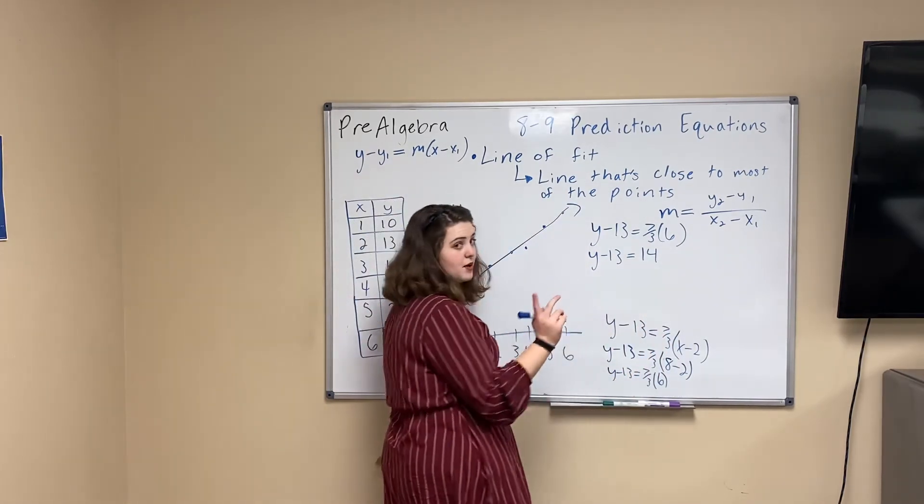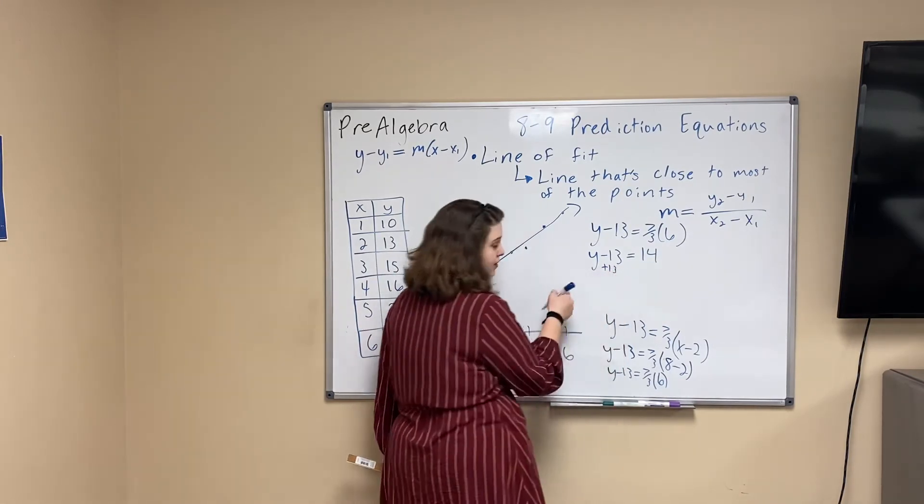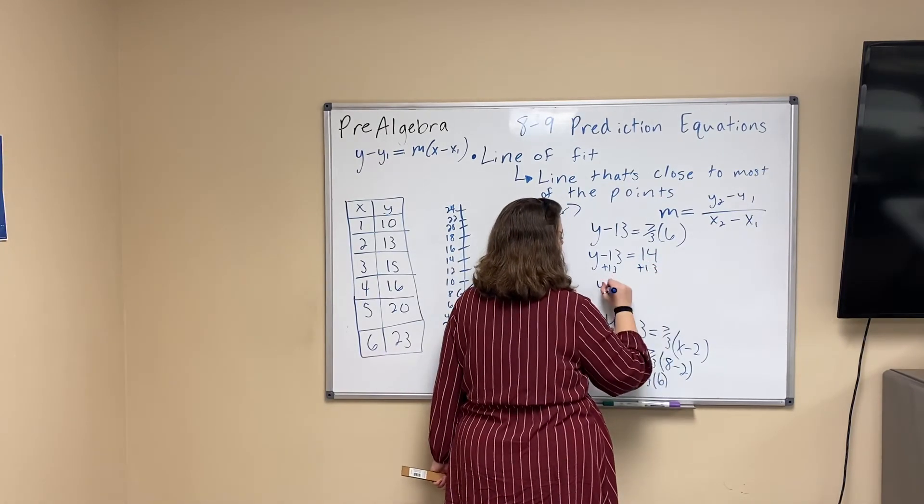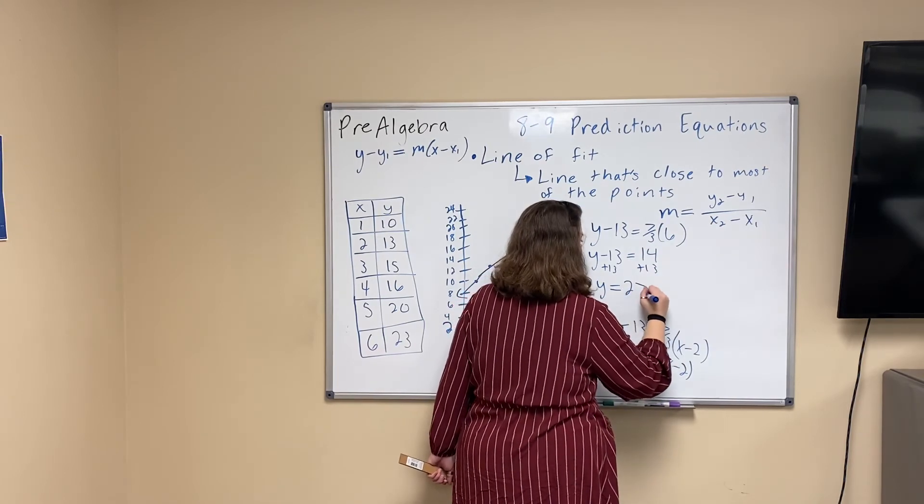Now we have to keep getting y by itself. So we're going to add 13 to this side, and whatever I do to this side, I have to do to the other side. So y equals 14 plus 13, which is 27.